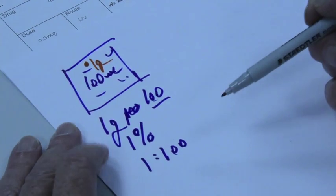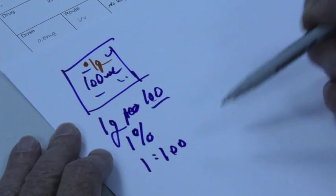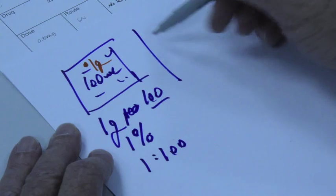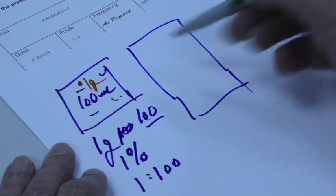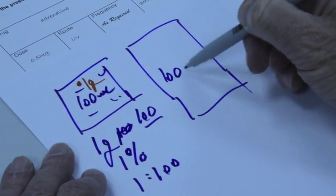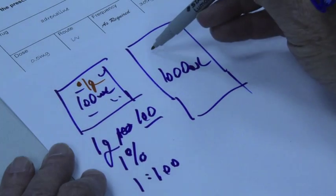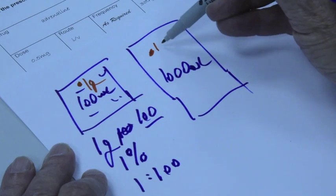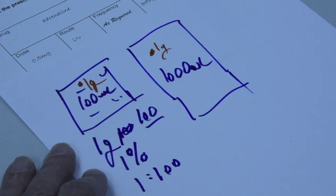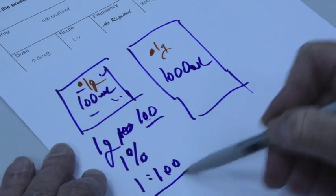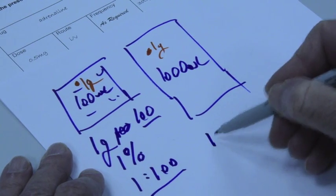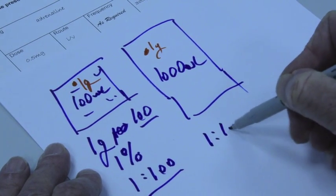If you've got a slightly bigger pot, bigger jam jar, and that had 1000 mils in it, and that had 1 gram, we could then say that instead of 1 to 100, this was a ratio of 1 to 1000.